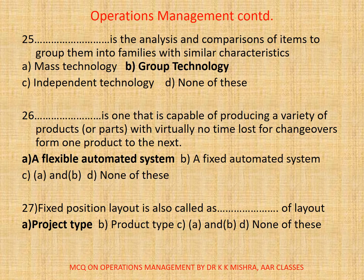25. Dash is the analysis and comparison of items to group them into families with similar characteristics. A. Mass technology. B. Group technology. C. Independent technology. D. None of these. The correct option is B. Group technology.